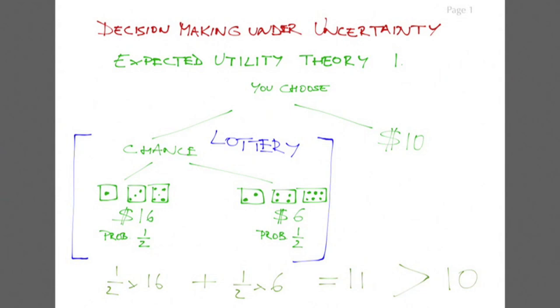The problem with using expected value is that you have no way of taking into account the fact that one of your choices may be riskier and you may not like that. Using expected utility instead of expected value can incorporate your risk preference into your decision-making.